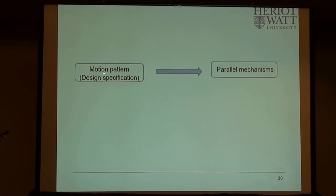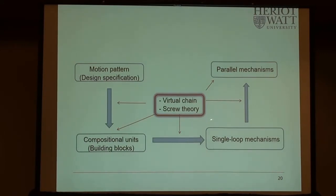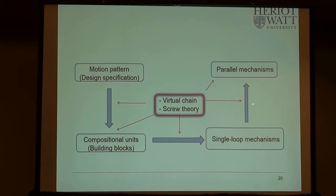The basic idea of this approach is to use networks similar to building toys, using different components, so we don't need to derive many equations. The idea is how to select components for the four-step development. Regarding the parallel mechanism design, we start with motion requirements—two-axis translation, three-axis translation, or rotation about one point. There are two key concepts: one is a virtual chain, which is a simple kinematic chain representing motion without mathematical equations. The second is screw theory.